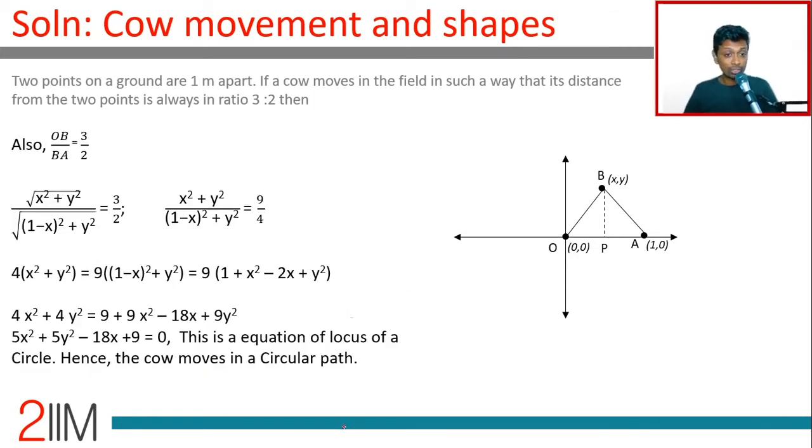x square plus y square by (one minus x) the whole square plus y square is nine by four. 4(x square) plus 4(y square) is 9 into x square minus 2x plus 1 plus 9(y square). And so both of these go that side: 5x square plus 5y square minus 18x plus 9 is equal to 0.